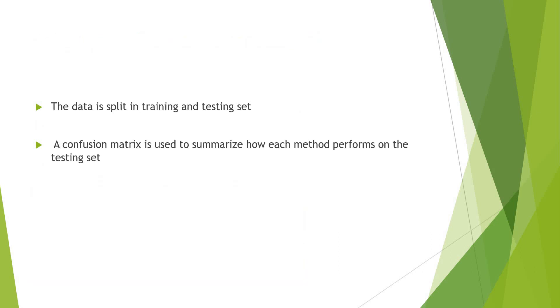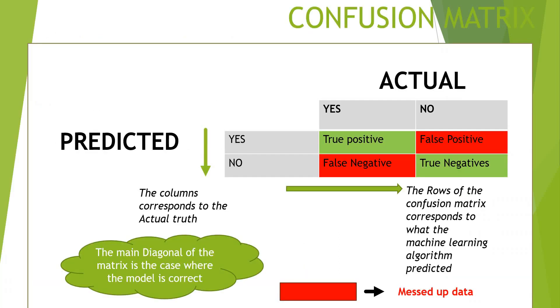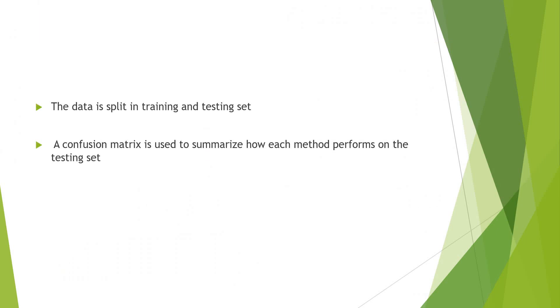First, the data is split into training and testing set. A confusion matrix summarizes how each method performs on the testing set.